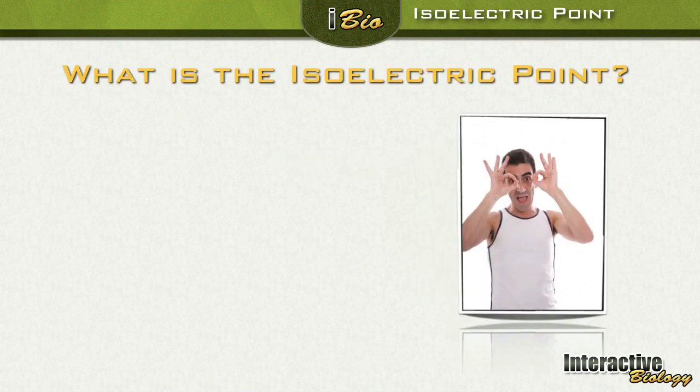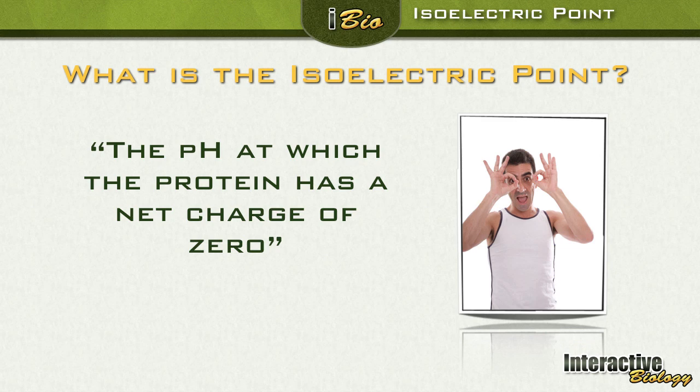So what exactly is the isoelectric point? I'm glad you asked. The isoelectric point is the pH at which the protein has a net charge of zero. So if the pH is at the isoelectric point of a particular protein, that particular protein will have no net charge.